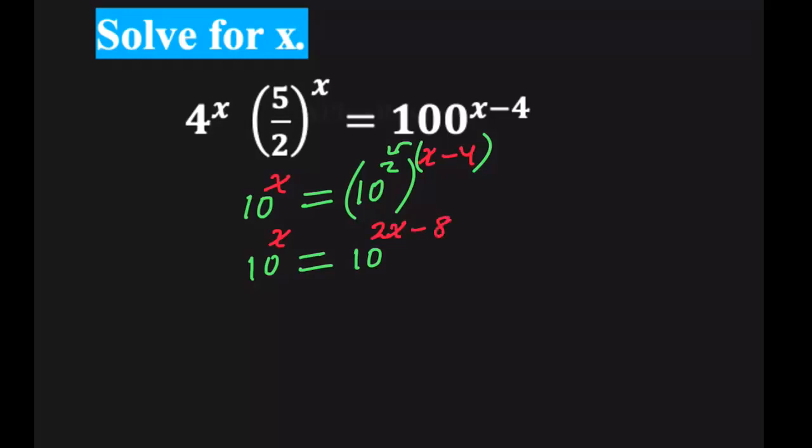We have the same bases on both sides. Therefore, we're going to set the powers equal to each other. And we have x is equal 2x minus 8.